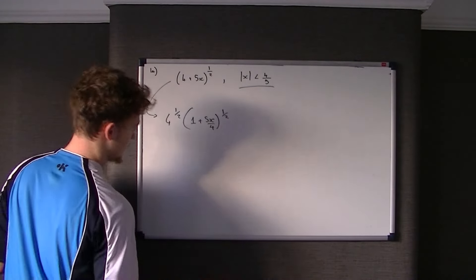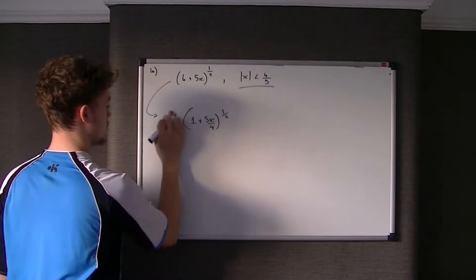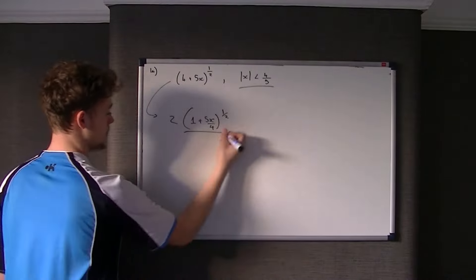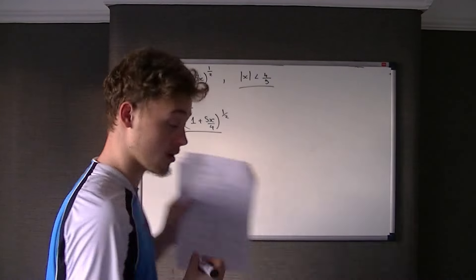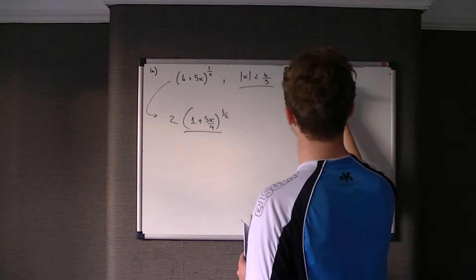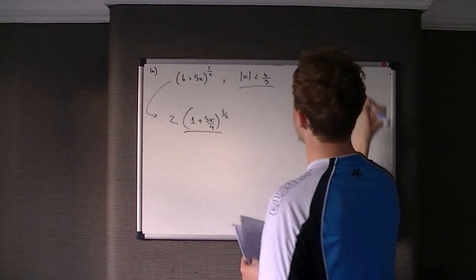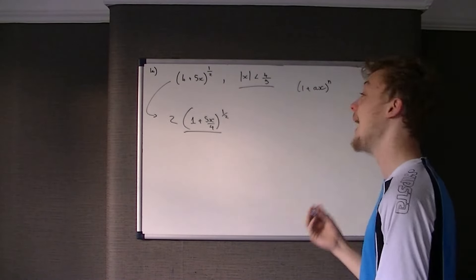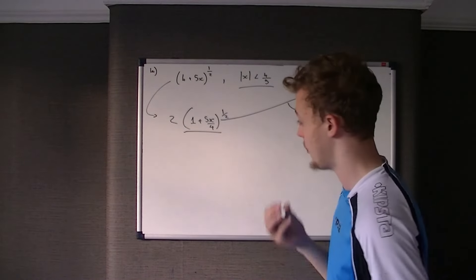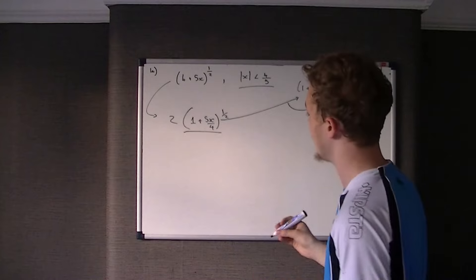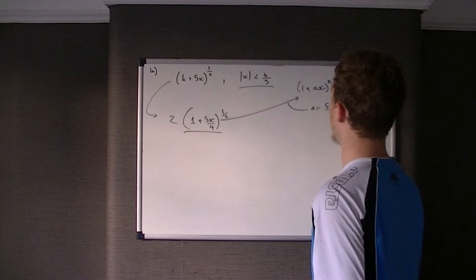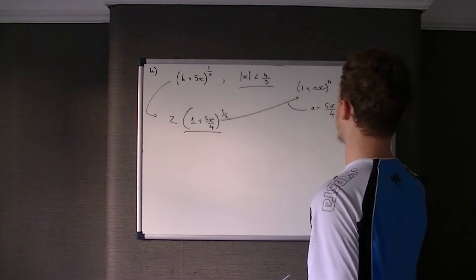Obviously 4 to the power of a half is the square root of 4, which is just 2, so we replace that with 2. Now we find the expansion of (1 + 5x/4)^(1/2) and multiply it by 2. Comparing to (1 + Ax)^n, we have A equal to 5x/4 and n equal to a half.